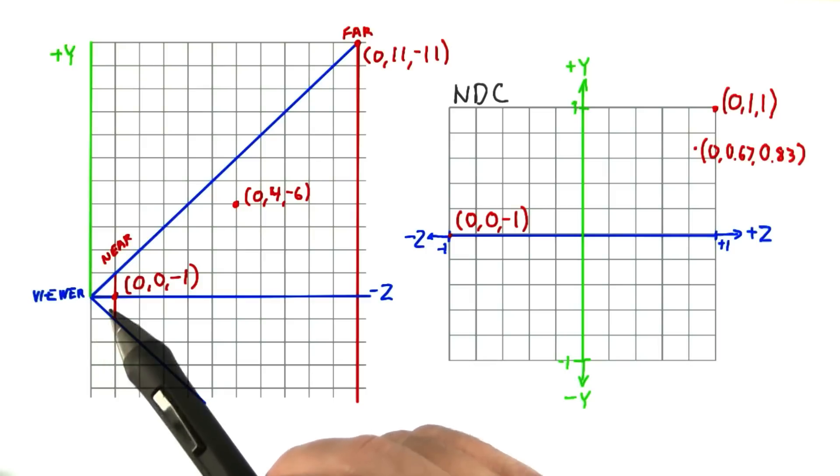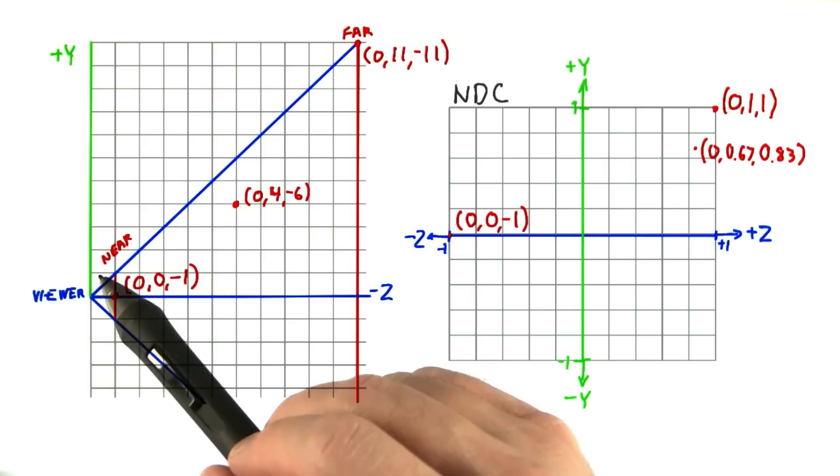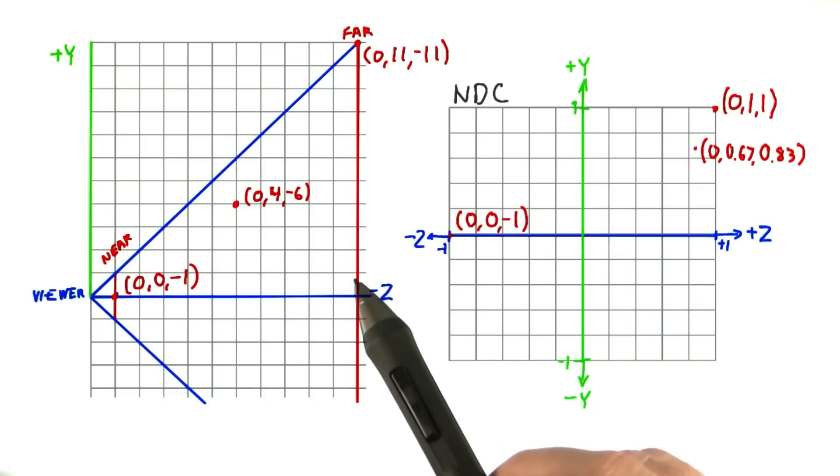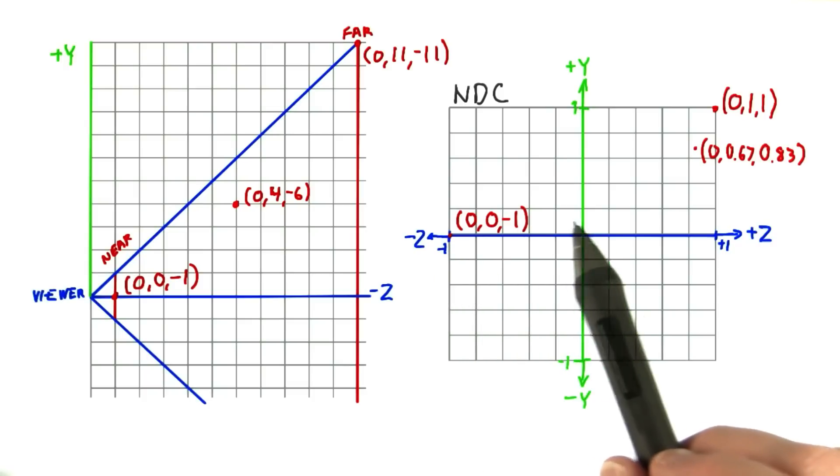Look at what's happened with these points and where they're transformed. They started inside or on the edge of our frustum. After the projection matrix is applied and division by w is performed, the resulting points are in normalized device coordinates.